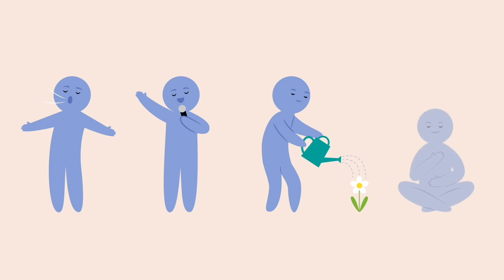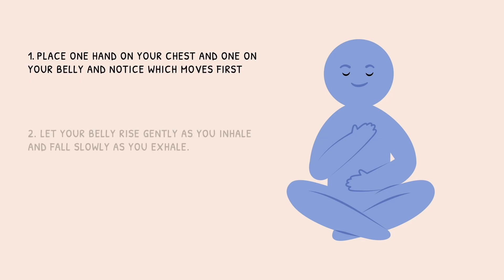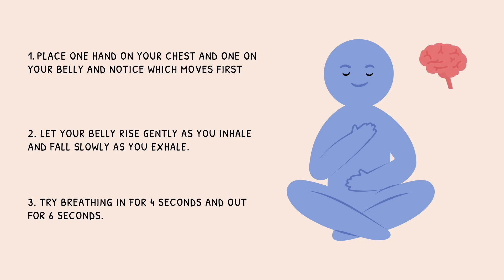One of the simplest ways to engage your vagal brake is belly breathing. Place one hand on your chest and one on your belly, and notice which moves first. Let your belly rise gently as you inhale and fall slowly as you exhale. Try breathing in for four seconds and out for six seconds, or whatever pace feels comfortable for you. This sends a powerful message to your brain that you're safe, slowing your heart and calming your body. Practice this several times a day, not just during times of stress, to strengthen your vagal tone.